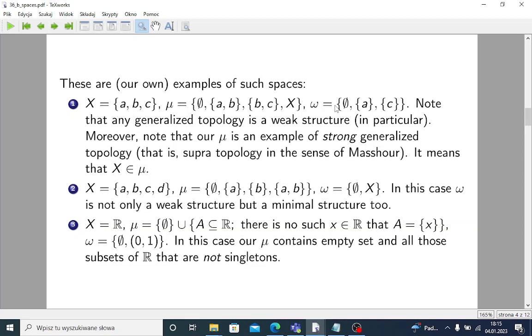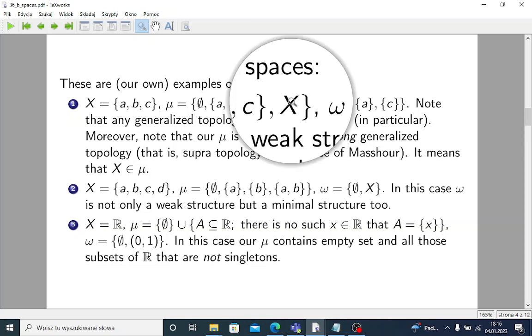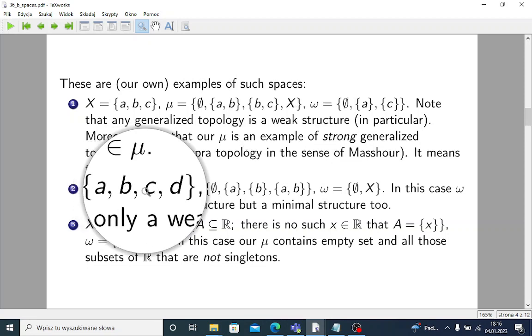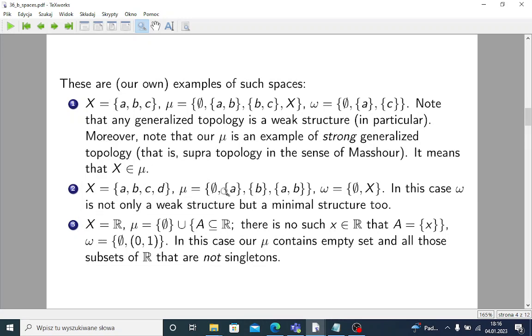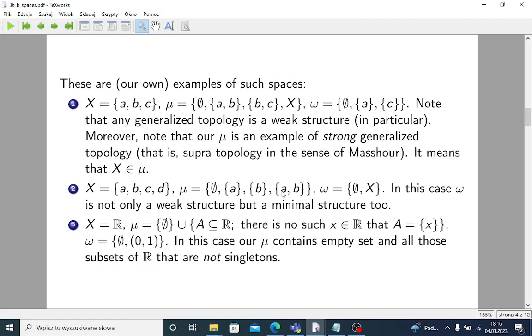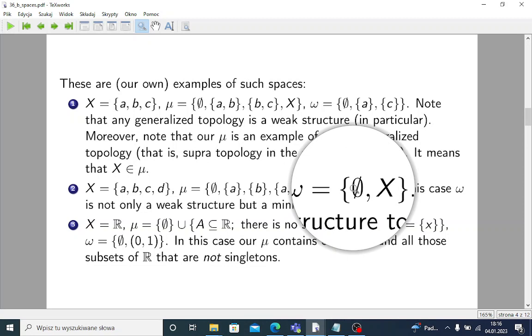And here we have some rather arbitrary weak structure. Note that our generalized topology μ in this case is an example of strong generalized topology, so-called supratopology in the sense of Mashour. It means that the whole universe is in this generalized topology. In the second case, we have four elements. We have some generalized topology imposed on this space, and then we have some weak structure.